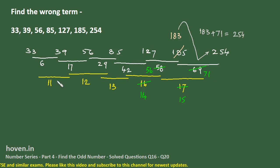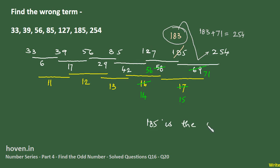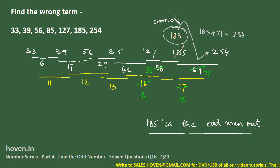Therefore what our strategy has been proved correct. And therefore 183 is correct and 185 is the odd man out. So 185 is the odd man out, and instead of that 183 should be the correct number at this point. Let us move to our next question now.